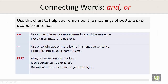Use this chart to help you remember the meanings of and and or in a simple sentence. Use and to join two or more items in a positive sentence — for example: I love tacos, pizza, and egg rolls. Use or to join two or more items in a negative sentence — for example: I don't like hot dogs or hamburgers.